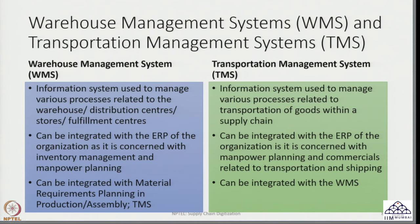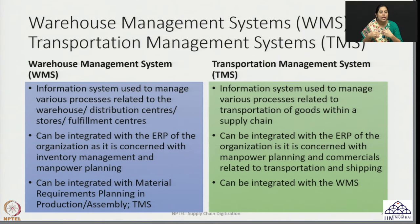They are slightly different but quite different in the kind of focus they have and the kinds of processes they look at. A warehouse management system is the information system designed for the activities and processes within a warehouse — managing all those activities within the warehouse. As we already know from previous lectures, it is not necessary that you have a warehouse itself; you could also be dealing with distribution centers, fulfillment centers, or sort centers.